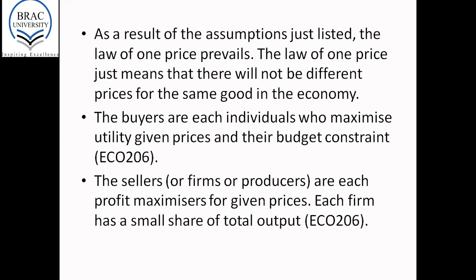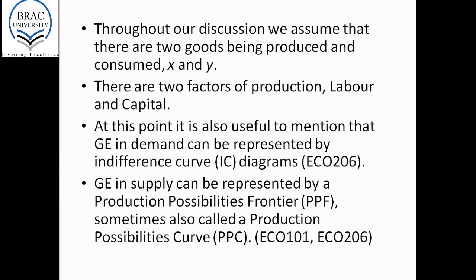As a result of these assumptions, the law of one price prevails, which means there will not be different prices for the same good in the economy. Buyers are individuals who maximize utility given prices and their budget constraints — as you learned in ECO 206. Sellers or firms are each profit maximizers. For a given set of prices each firm has a small share of total output. Throughout our discussion we assume that there are two goods being produced and consumed, namely X and Y.